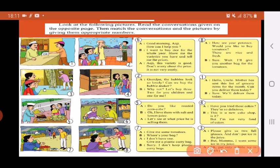Now let's look at the last picture, number eight. Again there's a vegetable lady selling vegetables, but here she is giving a bag to the man. So let's read the second conversation box. The lady says, Here are your potatoes. Would you like to buy tomatoes? These are nice and fresh. So the man takes the bag and replies, Sure, wait. I'll give you another bag for the tomatoes. So this you can put as number eight.